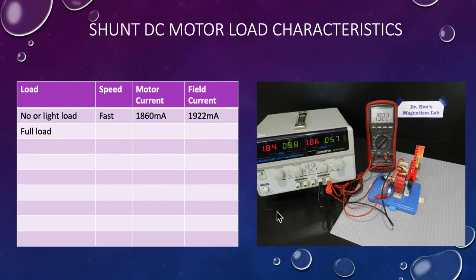Here we go. We're running at no load. Our motor current is at 1860 milliamps. And our field current is at 1922. So that gives us about 100 milliamps in the armature. Our armature is only about 100 milliamps. And you can see our armature current here very clearly. And you can see our current to the whole supply. And we're running at about 5.7 volts. We have to run at a lower voltage because we've got everything in parallel now.